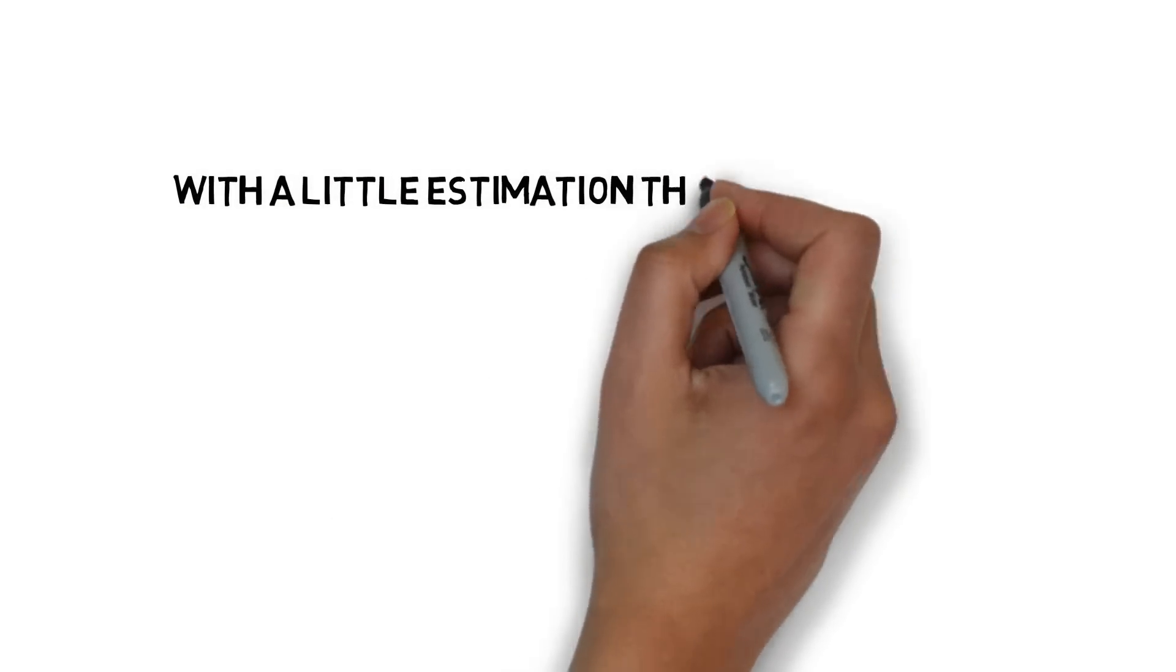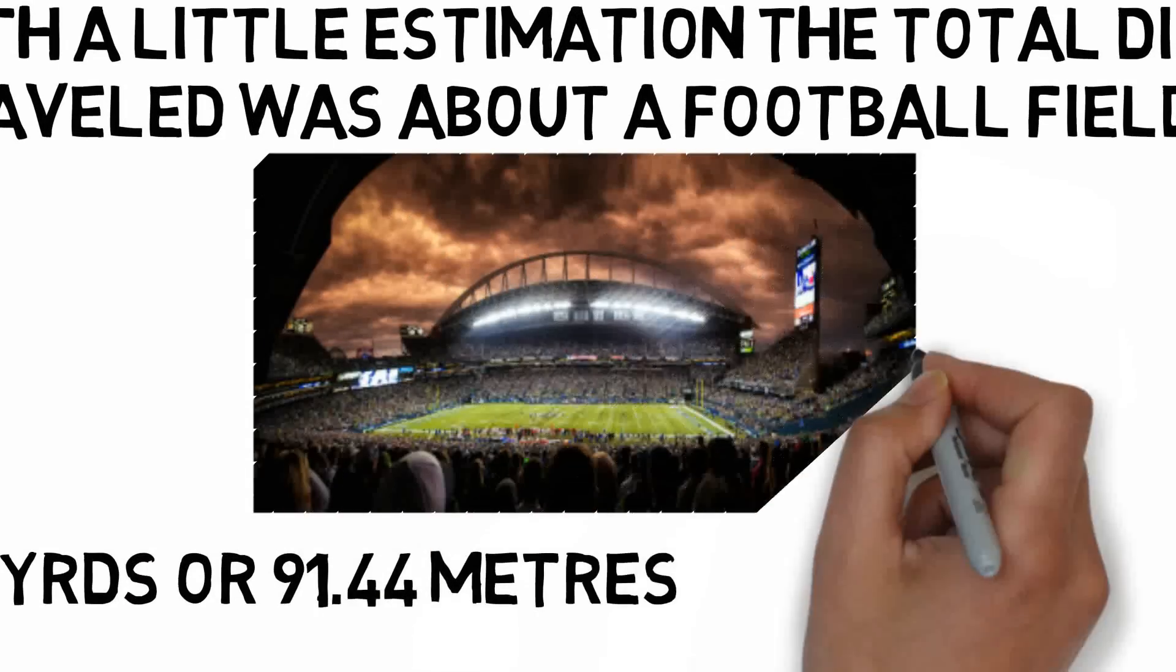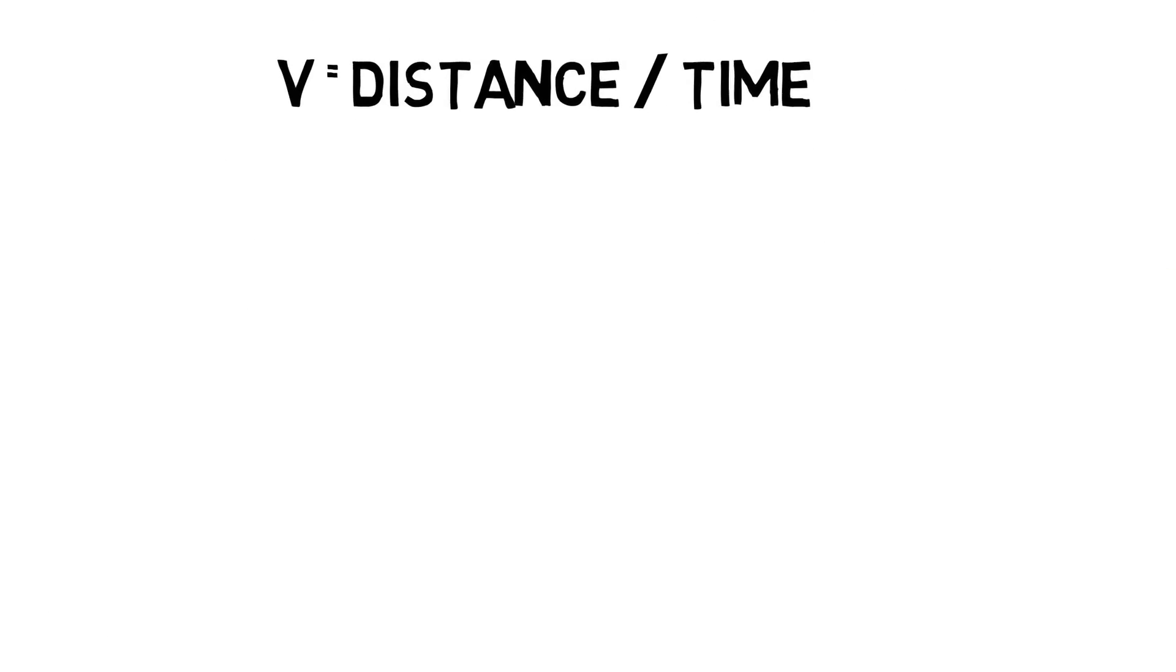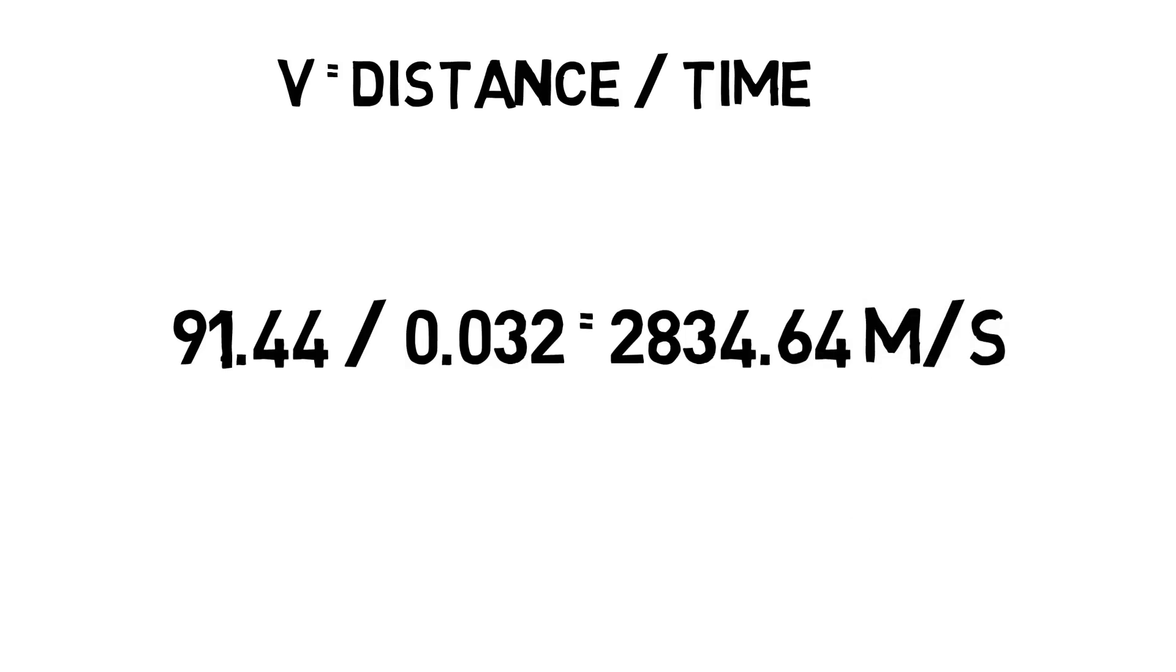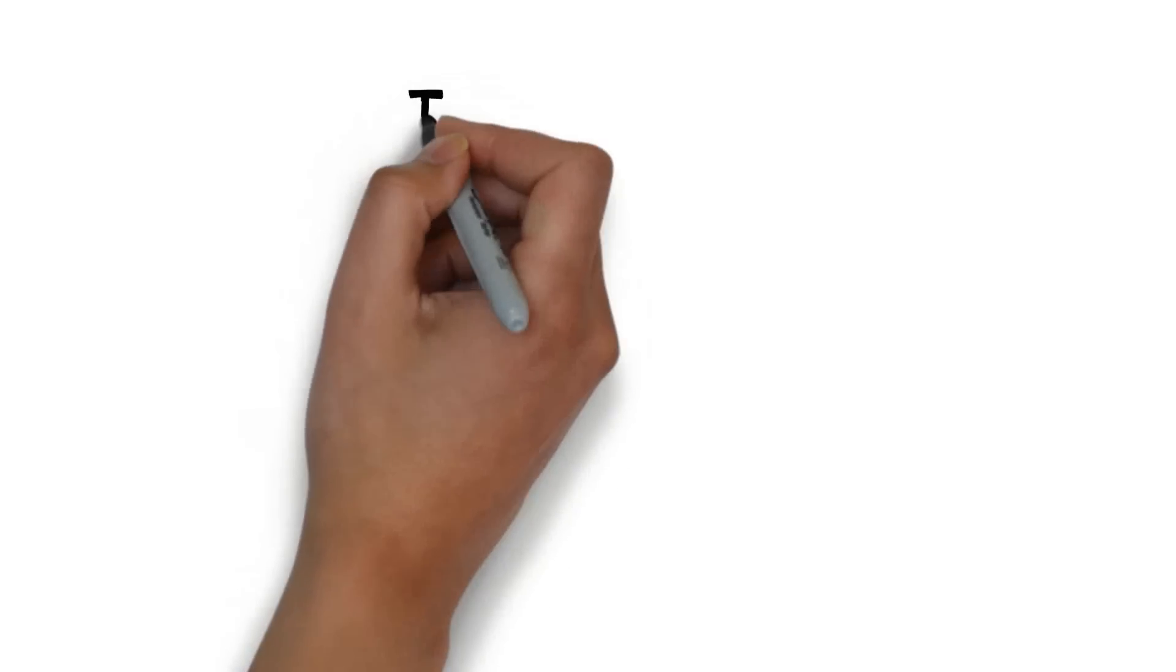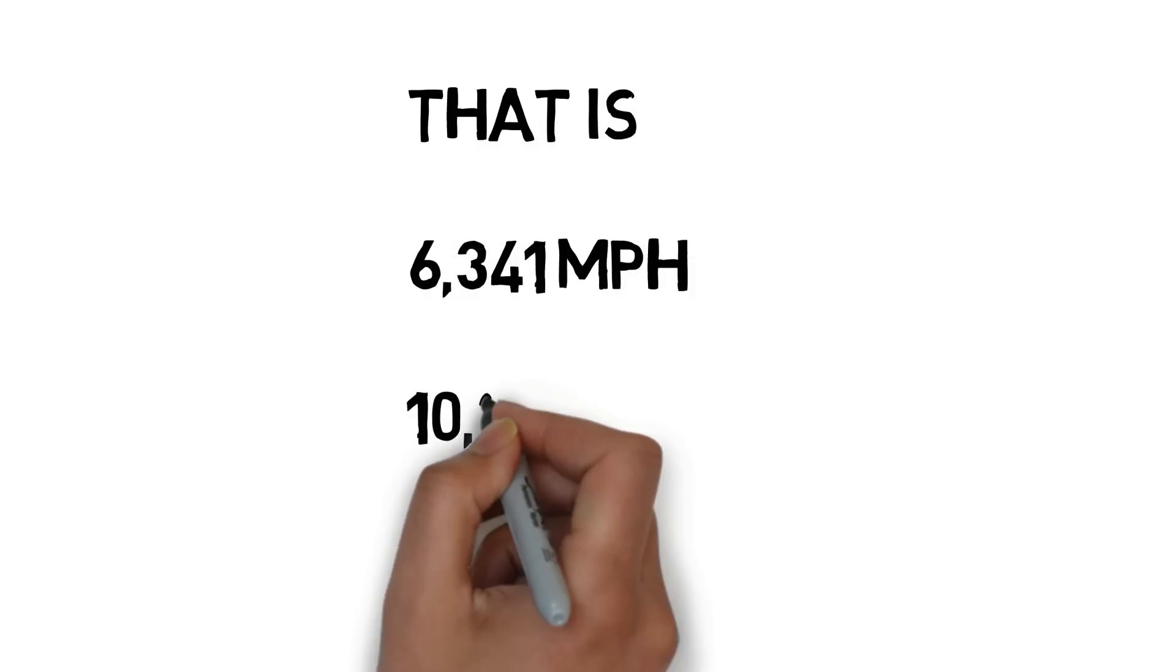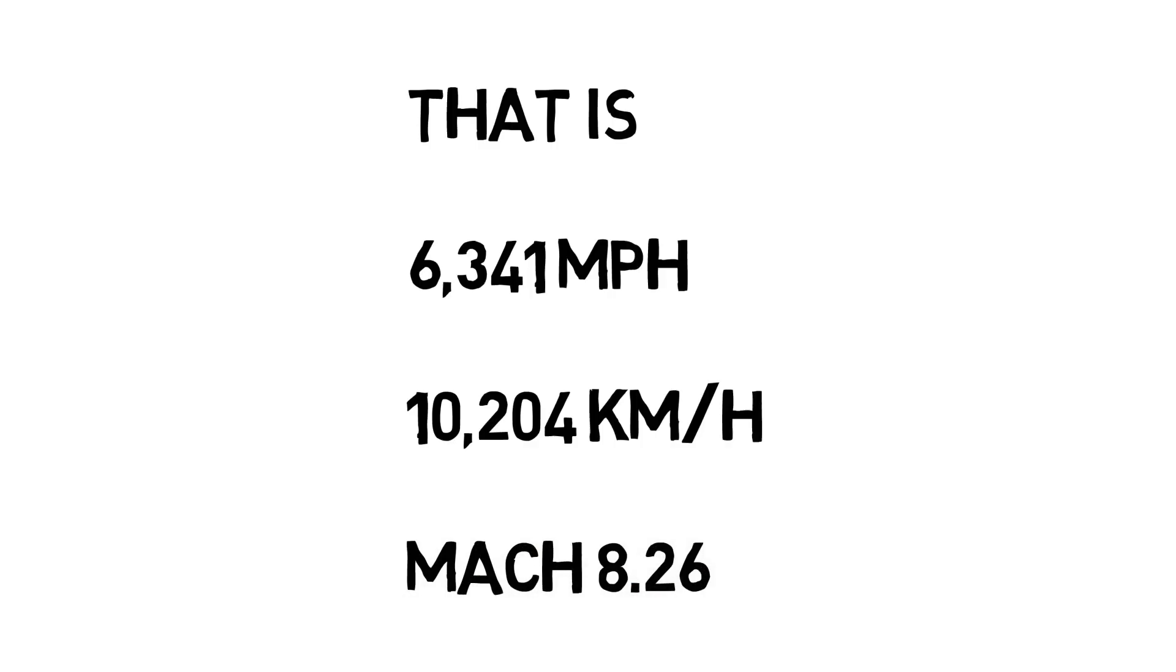With a little bit of estimation, we can assume that the total distance was 100 yards or 91.44 meters. Plugging in our variables for the formula for velocity, velocity equals distance divided by time, we get that the flash can run at 2,834.64 meters per second. In more conventional units, that's 6,341 miles per hour, or 10,204 kilometers per hour, 8.26 times the speed of sound.